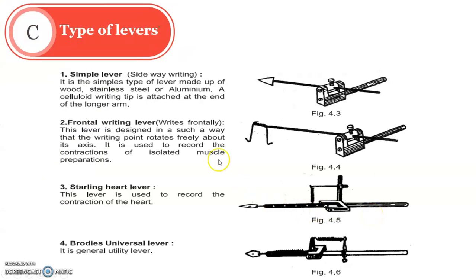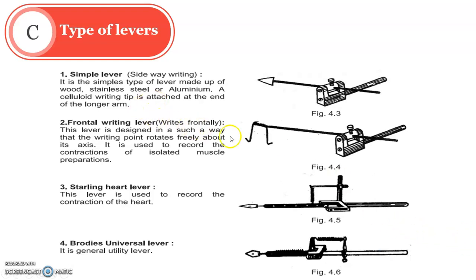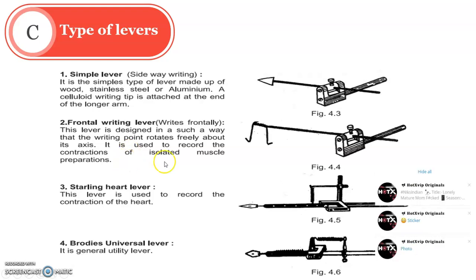The next part of today's demo lecture covers the types of levers. There are four important levers, and the fifth is the Gimbal Lever — you can see it in your manual. The first is the Simple Lever. The second is the Frontal Writing Lever — to identify it, note that two writing knobs are available and it is directly attached to the kymograph paper on the rotating drum. Another lever is the Heart Lever, where the spring records the heart's contraction movement on the drum. The fourth is the Brodie's Universal Lever.